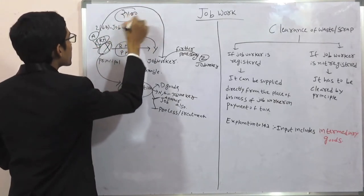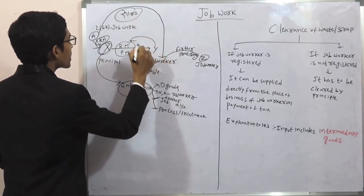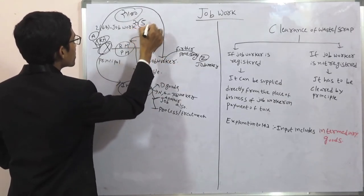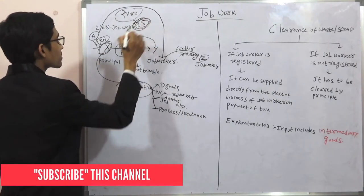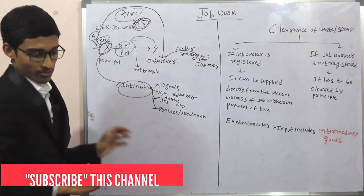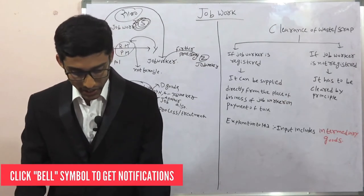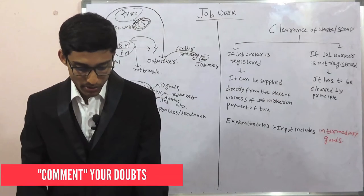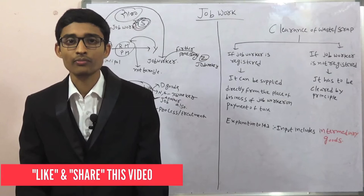For example, A Limited is sending goods worth rupees 100 to the job worker directly and GST is 5 rupees. X Limited can take this 5 rupees as input tax credit, even if the material is sent directly to the job worker without bringing it to the premises of X Limited. He can take input tax credit — this is deemed supply of input.